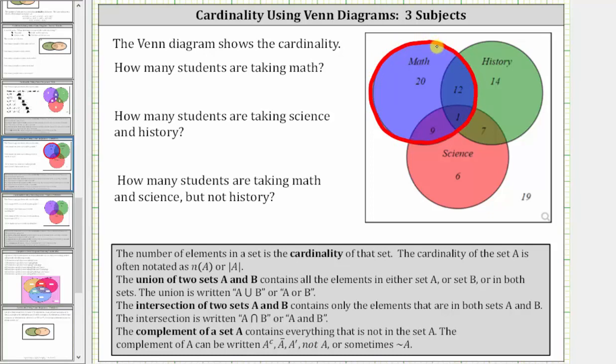Therefore, the number of students taking math is equal to 20 plus 12 plus 1 plus 9, which equals 42 students.